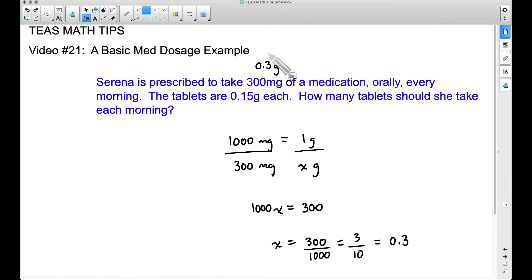Now we can take this information and this tablet information. What do we know about one tablet? One tablet is equal to 0.15 grams. So I'm setting up another proportion here. So again, each tablet is 0.15 grams. So one tablet equals 0.15 grams. We want to figure out how many tablets. So I'm going to put X tablets is equal to, well, what do we put over here?